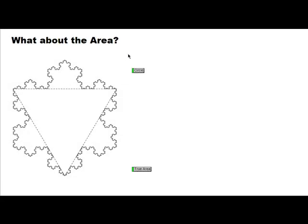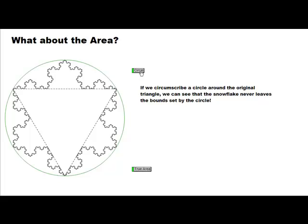Well, I think I could make a pretty convincing argument that the area of Koch's snowflake is finite. See how if we circumscribe a circle around that original equilateral triangle, we see that the snowflake never goes outside of the bounds set by the circle. Since the circle has a finite area, we can also assume that Koch's snowflake has a finite area. But what exactly is this area?